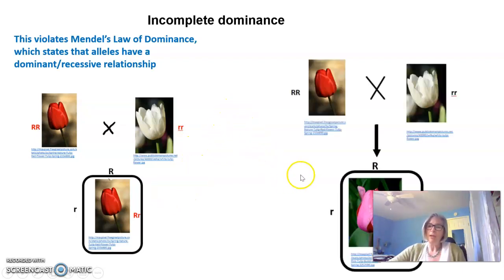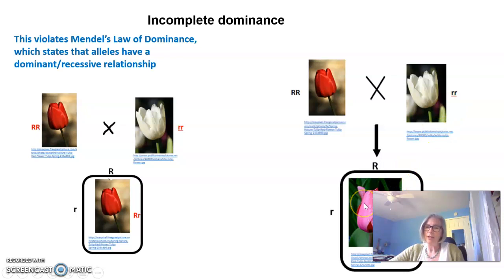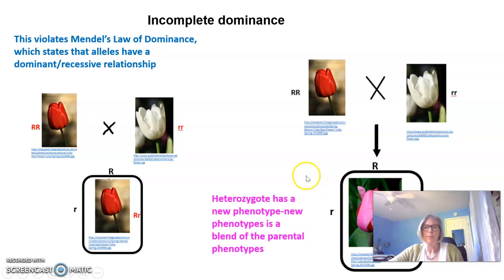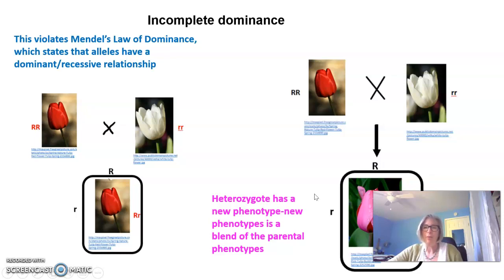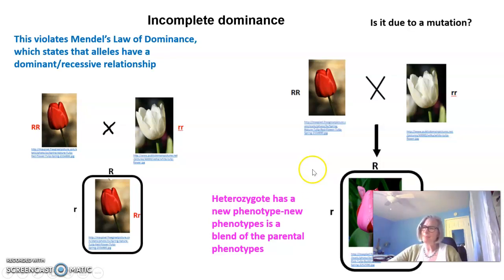But in our example on the right, crossing a homozygous dominant red flower with a homozygous recessive white flower gives 100 percent heterozygous offspring — but they're pink. It's a new phenotype. It doesn't have the dominant phenotype. So in incomplete dominance, the heterozygote has a new phenotype that is a blend of the parental phenotypes.